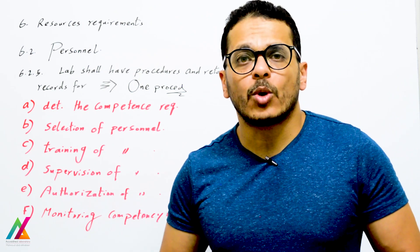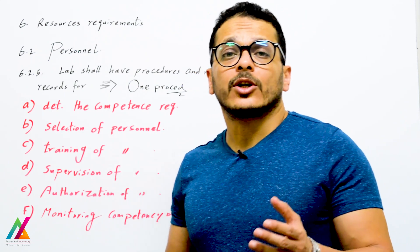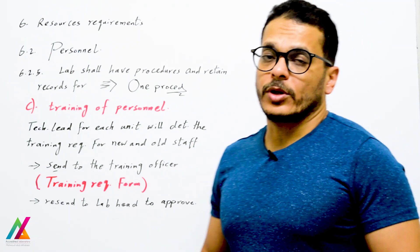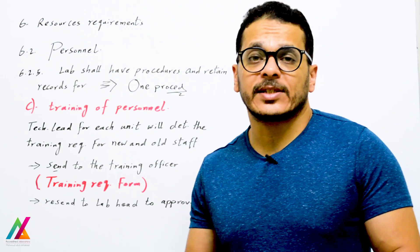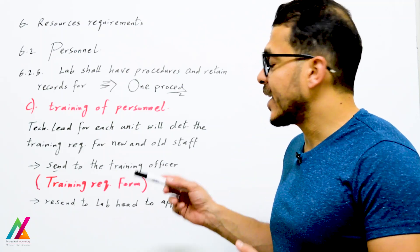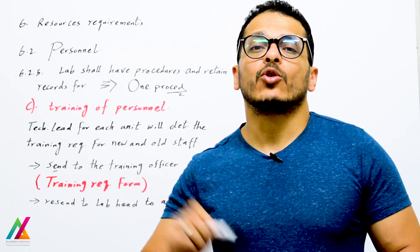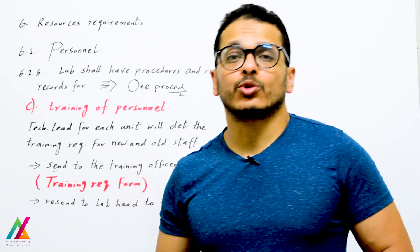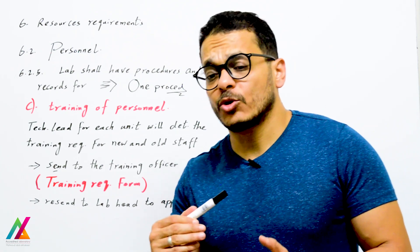Selection of personnel will be based on their competence, education, and lab requirements. For training, the technical lead for each unit will determine training requirements for both new and existing staff based on their qualification and competency, and will send these requirements in a training requirements form to the training officer. So far we have: competency test form, job description form, and training needs form.